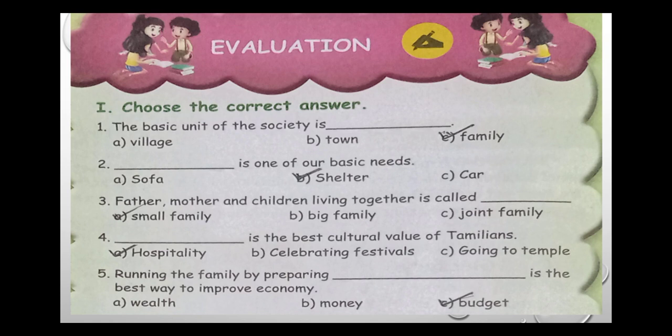Fourth question: dash is the best cultural value of family. The answer is hospitality. Fifth question: running the family by preparing dash is the best way to improve the economy. The answer is budget.